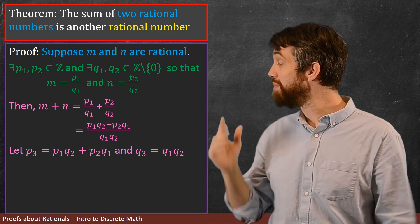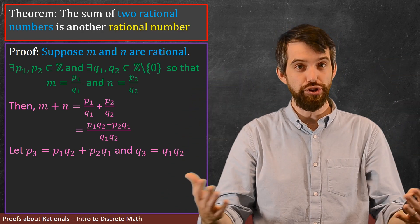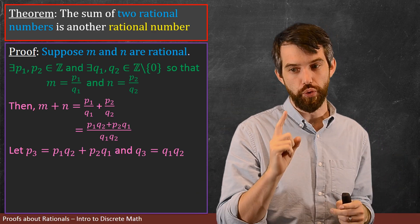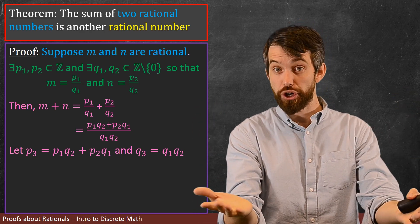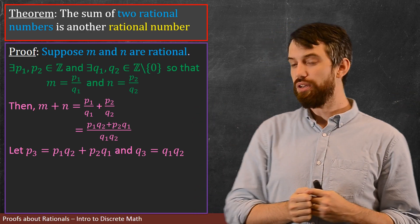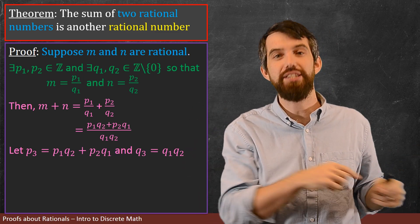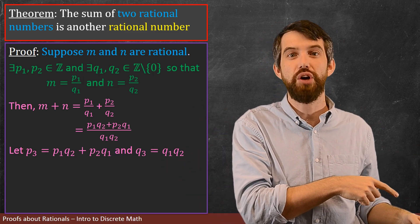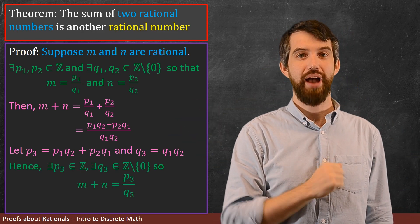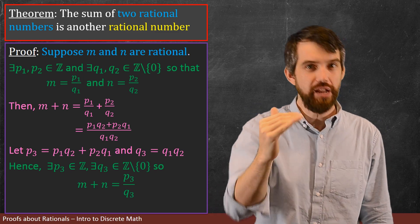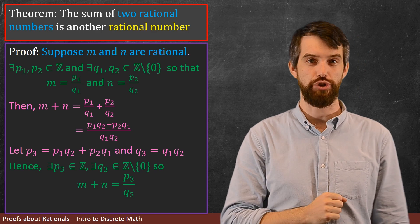Alright, I'm doing good, that's my manipulation. Am I ready to state the definition of my conclusion yet? I think so, with one little twist, is to note that the p3 is the product and sum of integers, so it's an integer, as it needed to be. The q3 is a product of non-zero integers, and so it is also a non-zero integer. And so, I can come along here and claim that I have a p3, and I have a q3, where the p3 is an integer, and the q3 is a non-zero integer, and my sum can be written as that quotient.